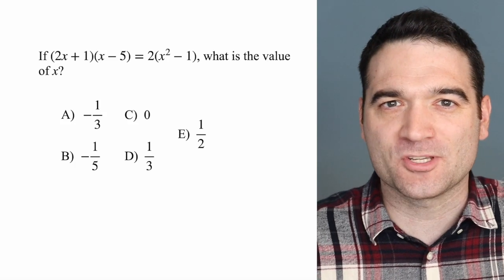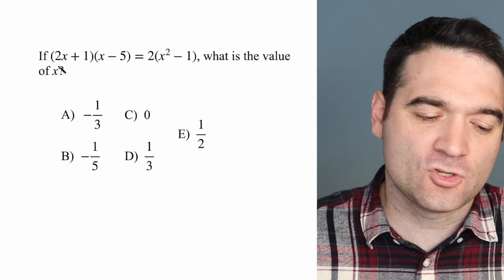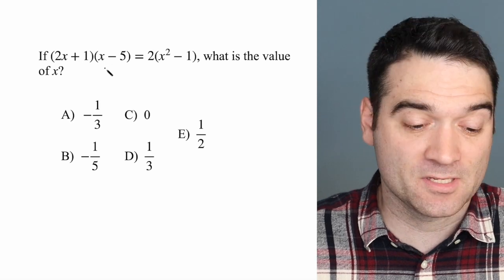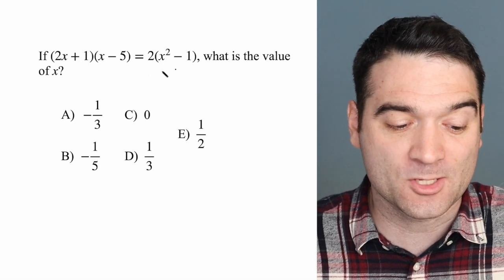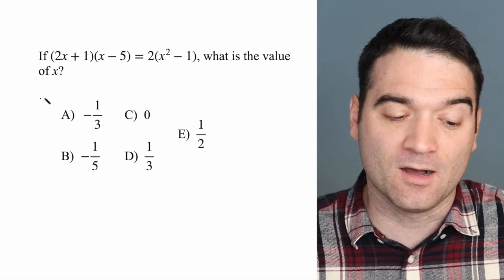Here's a GRE algebra question. Let's take a look. If 2x plus 1 times x minus 5 equals 2 times x squared minus 1, what is the value of x?